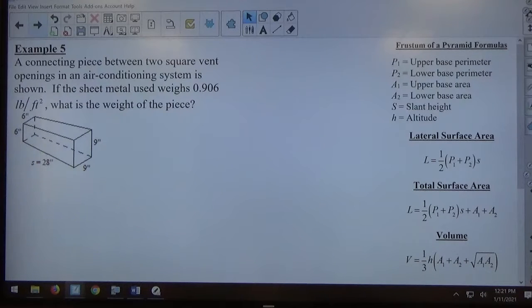A connecting piece between two square vent openings in an air conditioning system is shown. If the sheet metal used weighs 0.906 pounds per square foot, what is the weight of the piece?